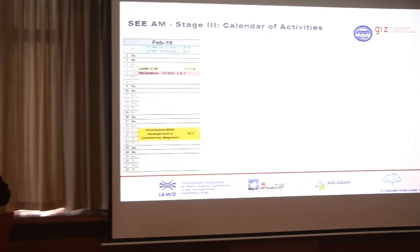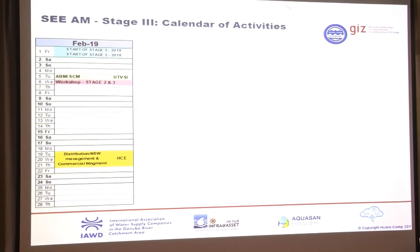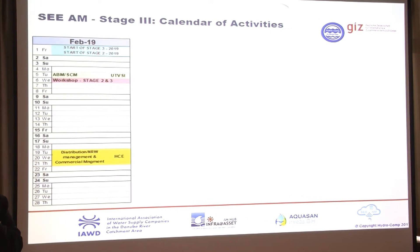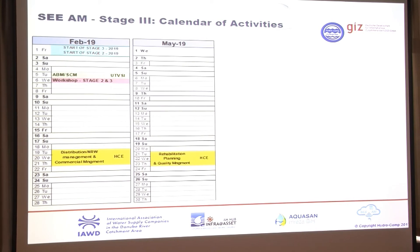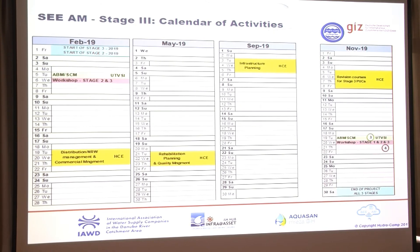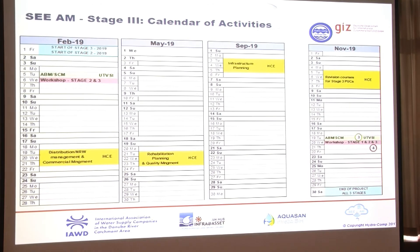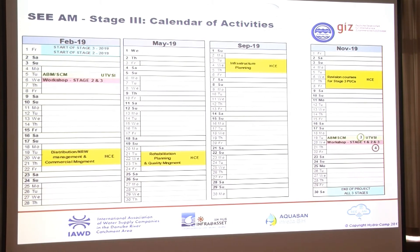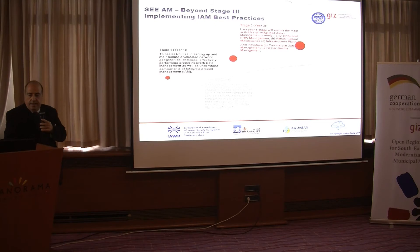So, we meet here in February 2019, all of us, for training — towards the end of February. Then we come again in May, then in September, then the fourth training course in November. The third year is very intensive — it has four training courses instead of two, and they're quite intensive. We are capitalizing on everything done in stage 1 and stage 2. And that in a nutshell concludes the whole program.